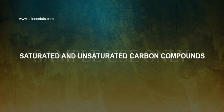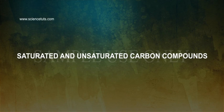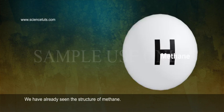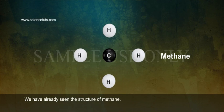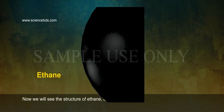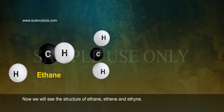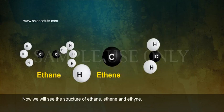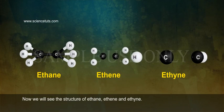Saturated and unsaturated carbon compounds. We have already seen the structure of methane. Now we will see the structure of ethane, ethene, and ethyne.